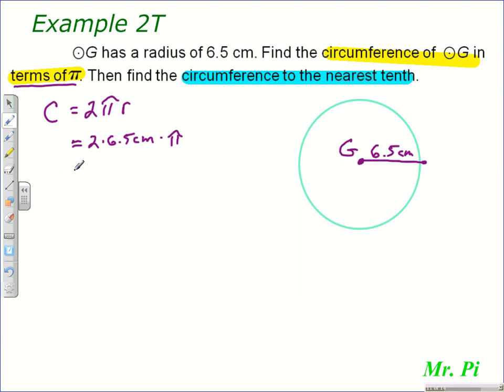Now in terms of pi, all we have to do is multiply these coefficients. Even though pi is a number, it's irrational. We have a special symbol for it. And 2 times 6.5 is 13. So that will give us 13 pi centimeters.